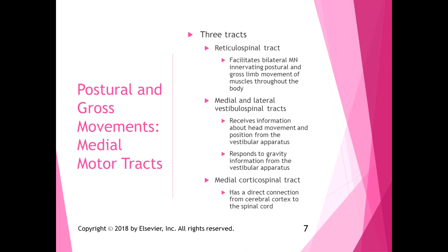There are three tracks included in the medial motor tracks. The reticulospinal tract — from its name we can tell it goes from the reticular system to the spine. The reticulospinal tract facilitates bilateral motor neurons innervating postural and gross limb movement of muscles throughout the body. You can think of it as like muscle alertness — similar to how the reticular system relates to general alertness and attention, it's keeping our muscles alert and ready.